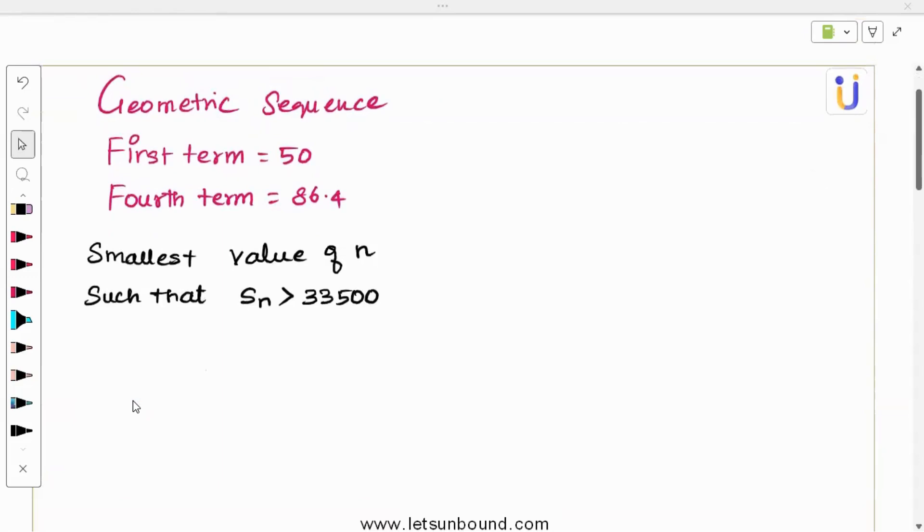Hi everyone, welcome to the discussion. We are going to discuss the third question of this series. This is a sequence and series-based concept, a geometric sequence given to us. First term is 50, fourth term is 86.4. We need to find the smallest value of n such that Sn is greater than 33,500.